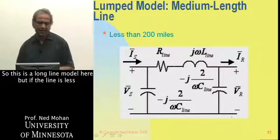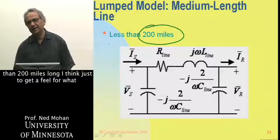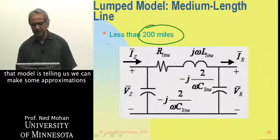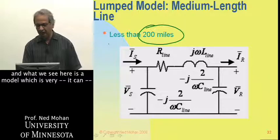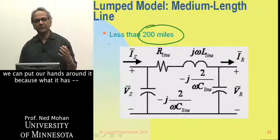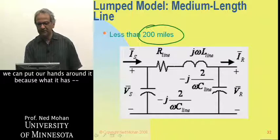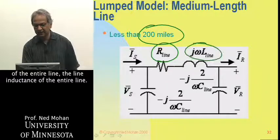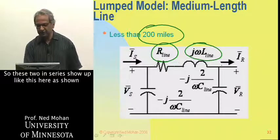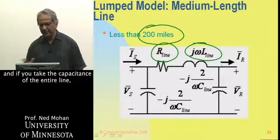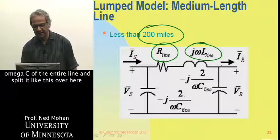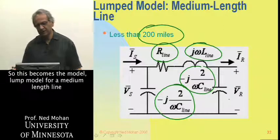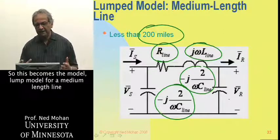But if the line is less than 200 miles long, I think just to get a feel for what that model is telling us, we can make some approximations, and what we see here is a model which we can put sort of our hands around it, because what it has, again, looking from the terminals, the line resistance of the entire line, the line inductance of the entire line. So these two in series show up like this here, as shown. And if you take the capacitance of the entire line, omega C of the entire line, and split it like this over here in terms of these capacitances here. So this becomes the model, lumped model for a medium length line.